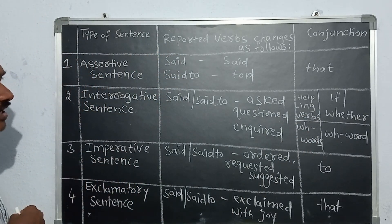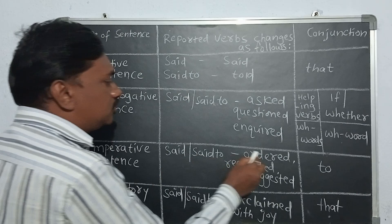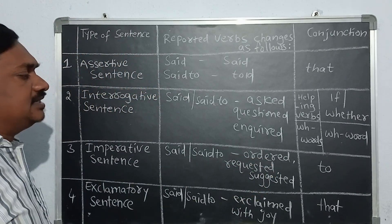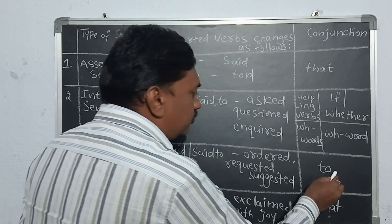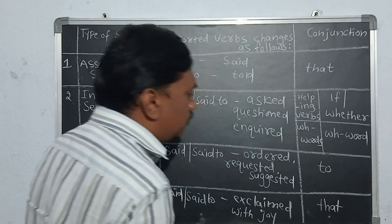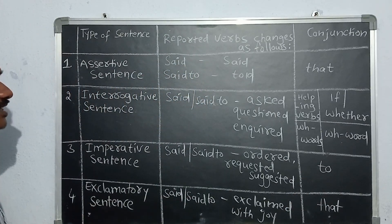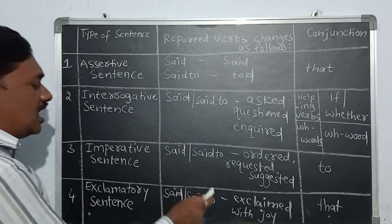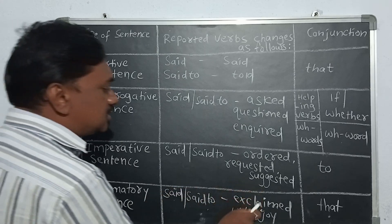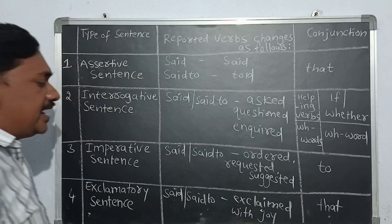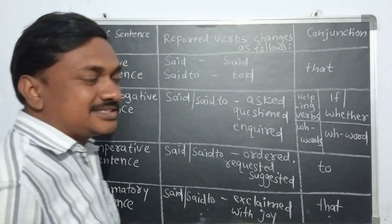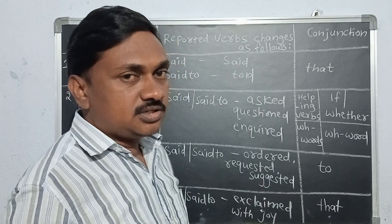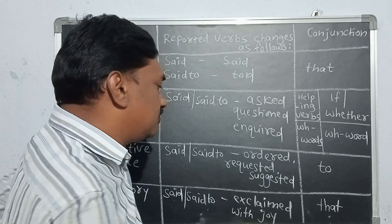For imperative sentences, the reported verb 'said' or 'said to' changes to 'ordered', 'requested', or 'suggested', and the conjunction 'to' is used. For exclamatory sentences, 'said' or 'said to' changes to 'exclaimed with joy' or 'exclaimed with sadness', depending on the situation of the sentence.